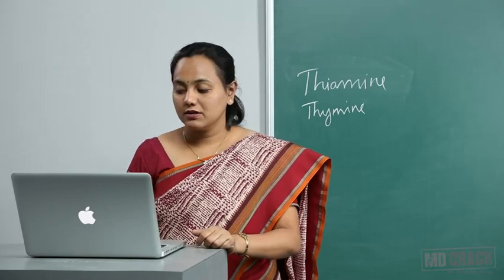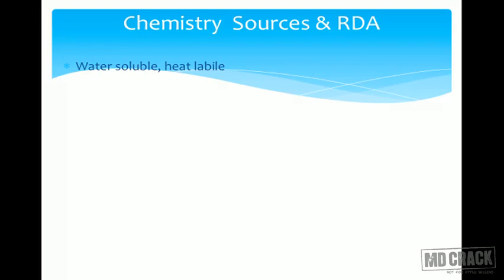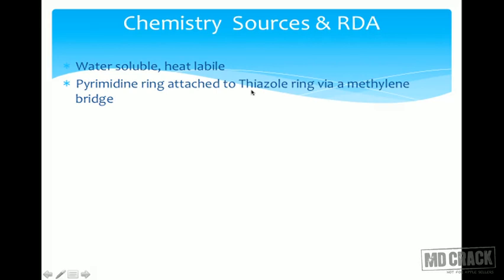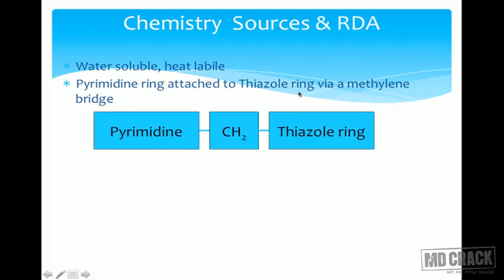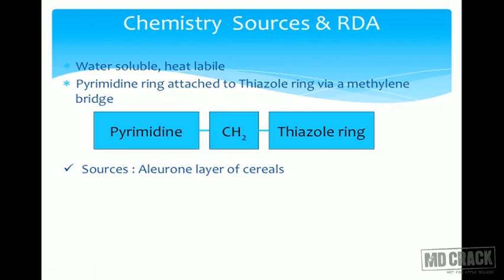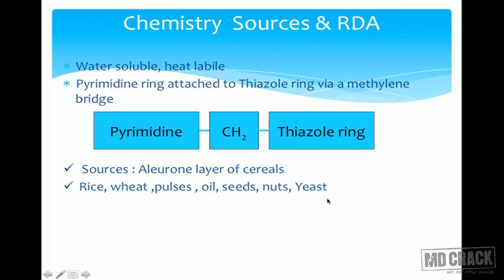Thiamine is vitamin B1. It is water-soluble and heat-labile, containing a pyrimidine ring attached to a thiazole ring via a methylene bridge. Thiamine is present in the aleurone layer of cereals. When cereals are processed and the aleurone layer is lost, the cereal becomes deficient in thiamine. It is present in rice, wheat, pulses, oil seeds, nuts, and yeast.